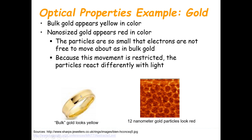But when we transform — when we reduce the size from bulk to nano — what happens? Along with the reduction of size, nano-sized gold appears red in color. You can see it here: bulk gold looks yellow, but when we reduce the size into the nano range, gold appears red in color. The particle is so small that we observe a change in color.